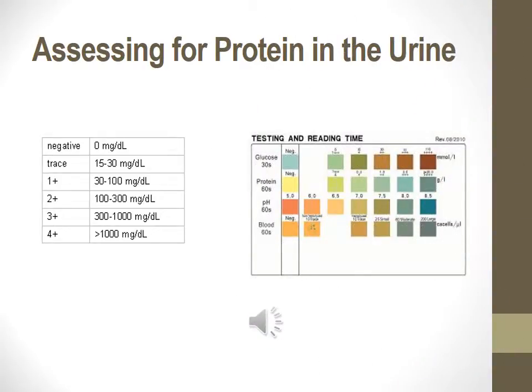These are charts showing when you are assessing for protein in the urine — it shows trace urine, negative, and then 1+, 2+, 3+, and 4+.